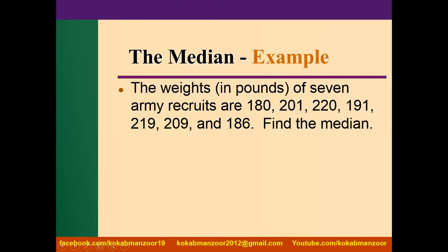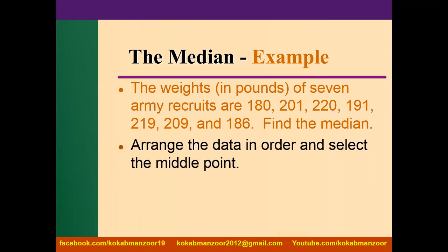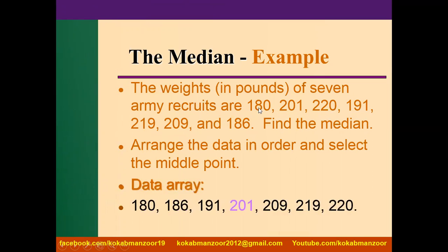To calculate the median, remember the first step: arrange the data in ascending order. The minimum value is 180, then 186, 191, 201, 209, 219, and 220. Now we have seven observations — an odd number — so it's easy to pick the middle value. Three values fall on each side, making 201 the middle value.